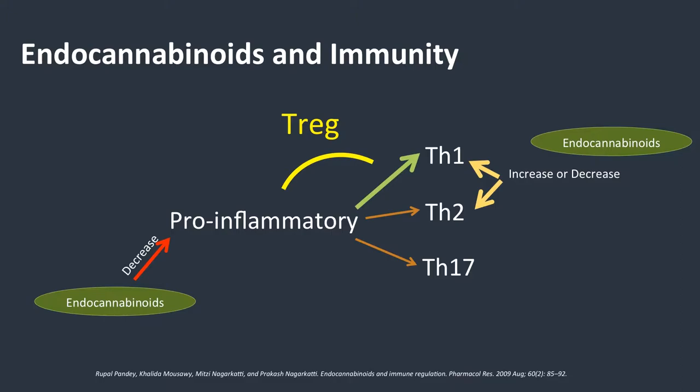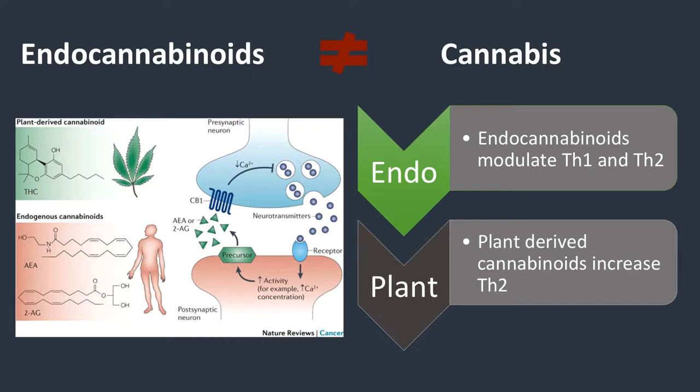I want to point out that endocannabinoids and cannabis are different neurochemicals. Whereas endocannabinoids modulate TH1 and TH2, plant-derived cannabinoids increase TH2. They bind to those receptors differently, and what they do is different.